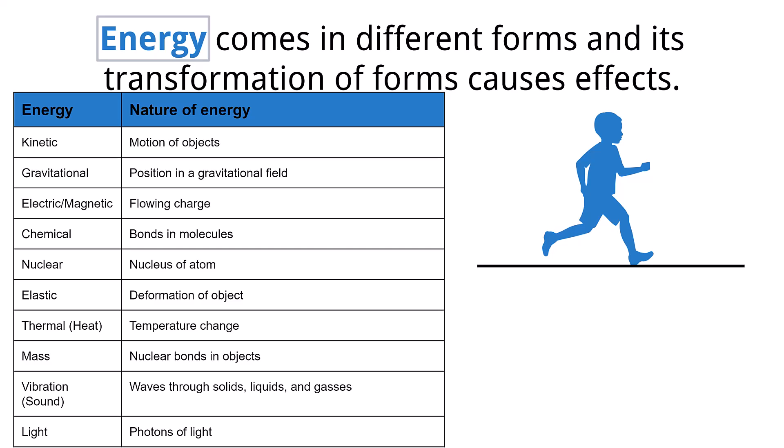Those forms are kinetic, gravitational potential, electric-slash-magnetic, chemical, nuclear, elastic potential, thermal, mass, vibration, and light. These are the most common forms we encounter in our study of physics. The table provides the ways in which these forms of energy may be found. The transformation of these forms causes effects.